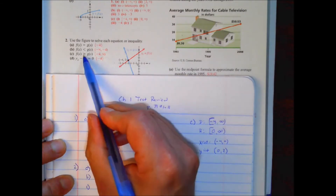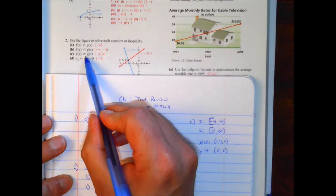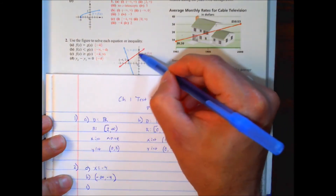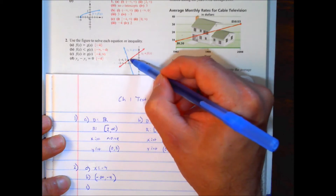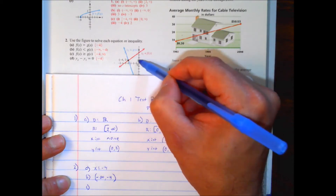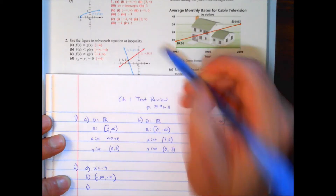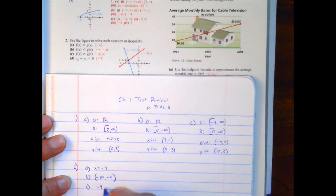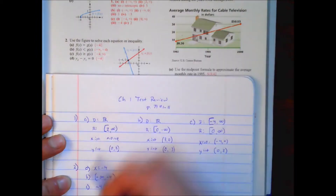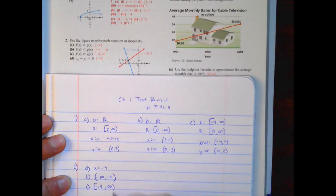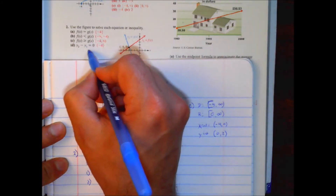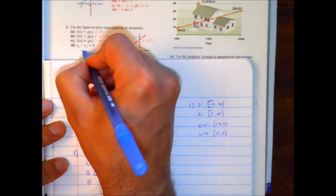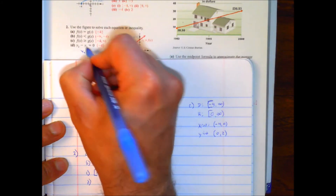Part c: where is f(x) greater than or equal to g(x)? Our f(x) outputs are greater here, so from negative 4 through negative 2, with a bracket. And part d — another way to think about this is to move terms over: where is y2 equal to y1? Once again, it's equal at x equals negative 4.